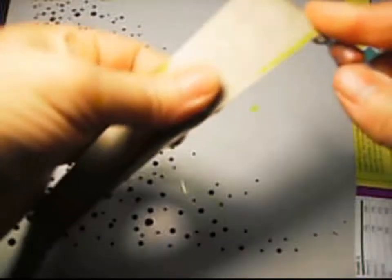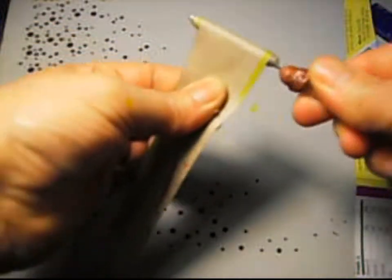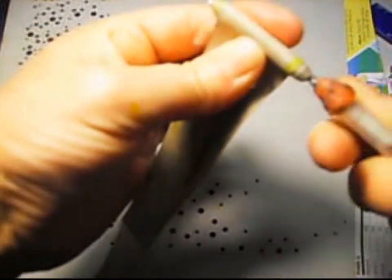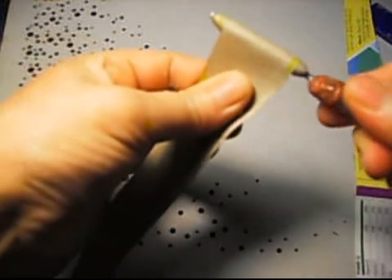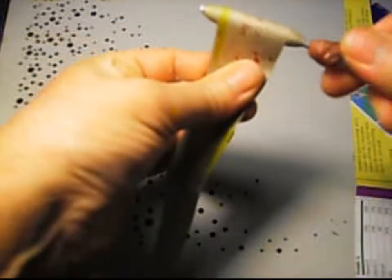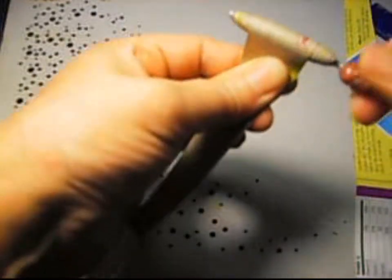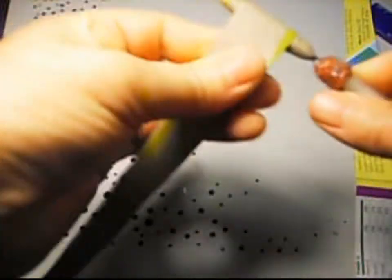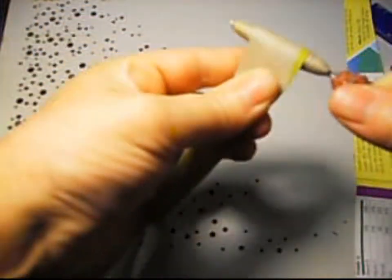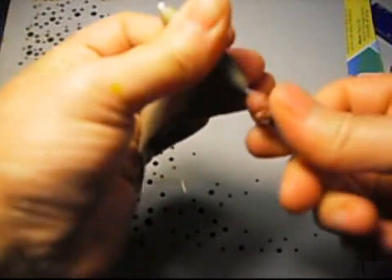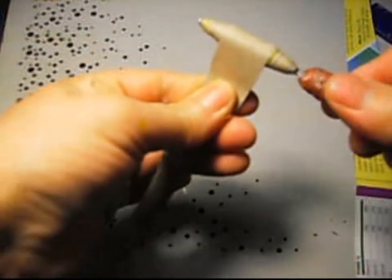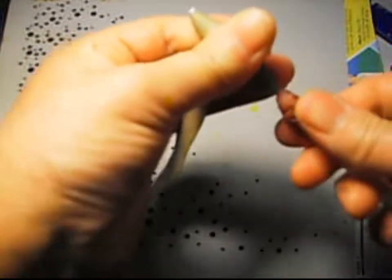And pull it. You can pull this as hard as you want, as long as your tool is strong enough not to break or something. Just go like that. Make your bead as round as you can. Keep rolling it, just like that.